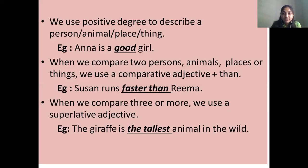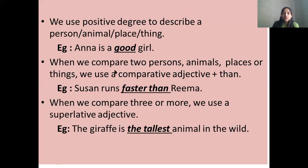In a nutshell: we use the positive degree to describe one person, one animal, one place, or one thing. For example, Anna is a good girl. Here I am talking about only one girl — Anna — and I use the word 'good' to describe her nature.